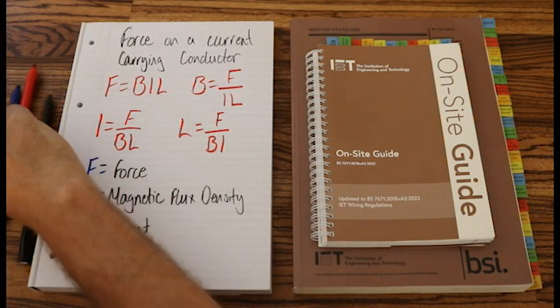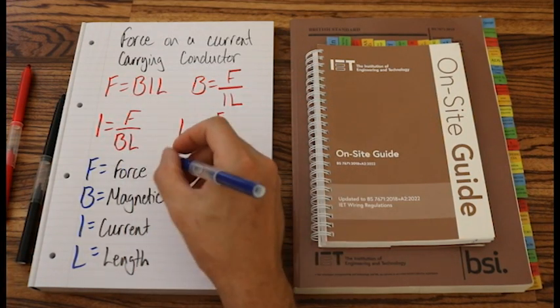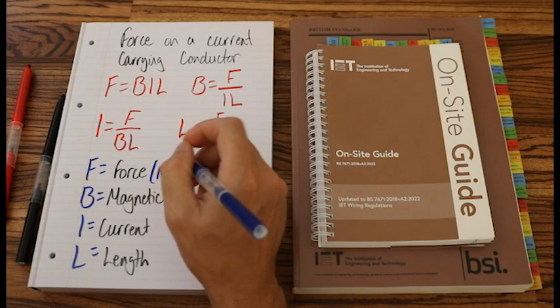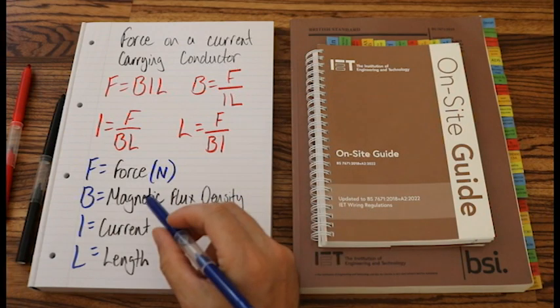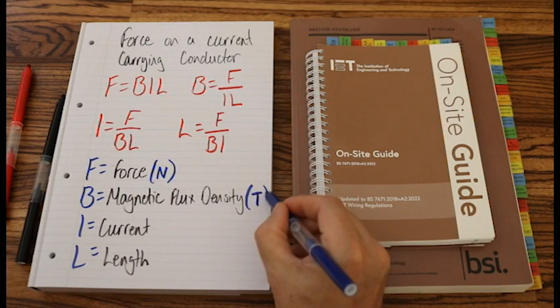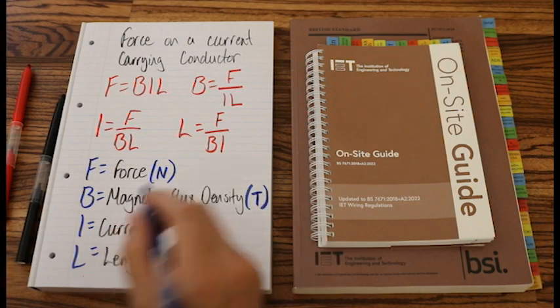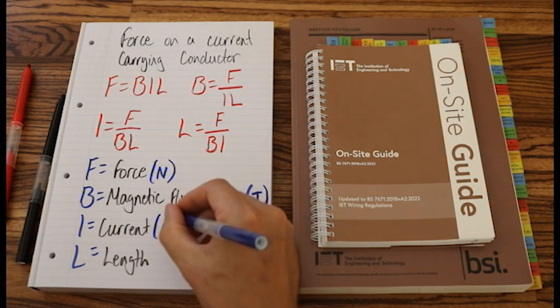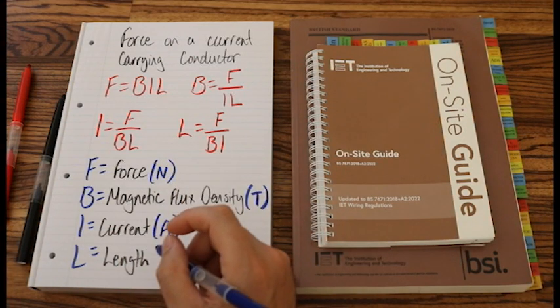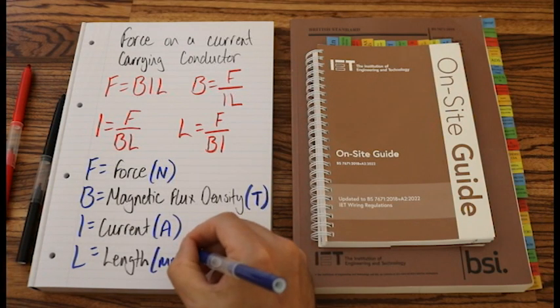Let's grab my blue pen again and write down the SI unit for each of these. So F is measured in Newtons, capital N. And magnetic flux density is measured in T, capital T stands for Tesla, just like the car. And current, hopefully we'll know that right now, that is measured in A, amps. And our length for this one is measured in millimeters.